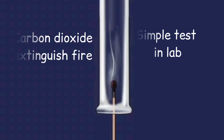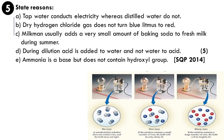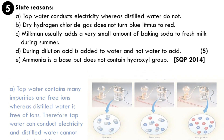Fifth question: state reasons why tap water can conduct electricity whereas distilled water cannot. When a solution contains ions, a bulb in the circuit glows — more ions means more brightness. Tap water passes through the earth's crust and dissolves free salts, so it contains free ions that help it conduct electricity. Distilled water is pure water with no ions, so it does not conduct electricity.